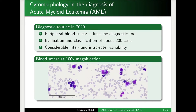AML is a type of leukemia whose diagnosis still today involves looking through a microscope and differentiating and manually counting different malignant and non-malignant cell types of leukocytes, which you can see on this image.